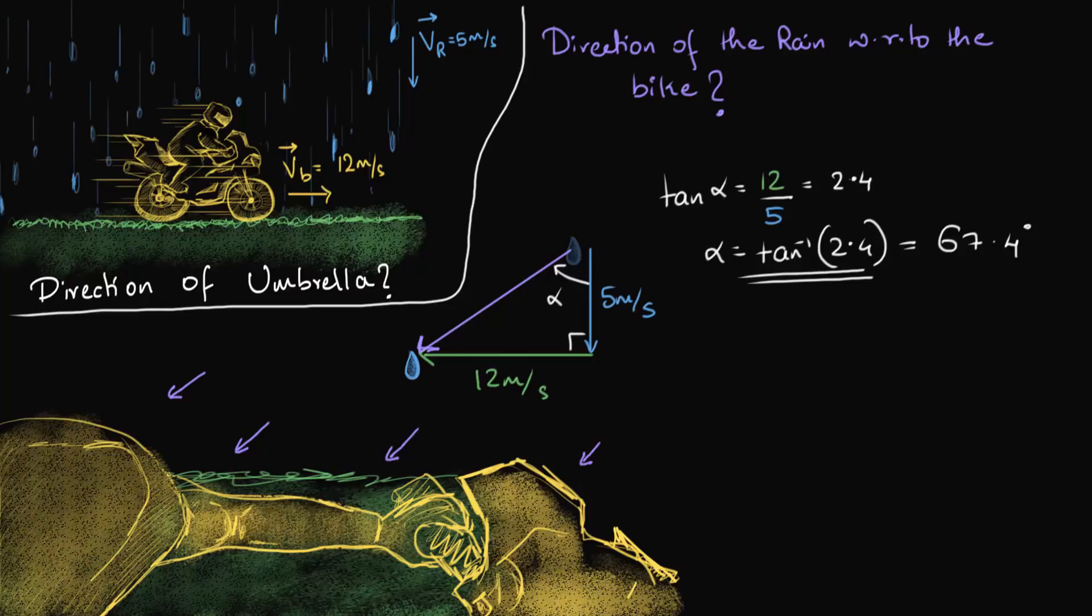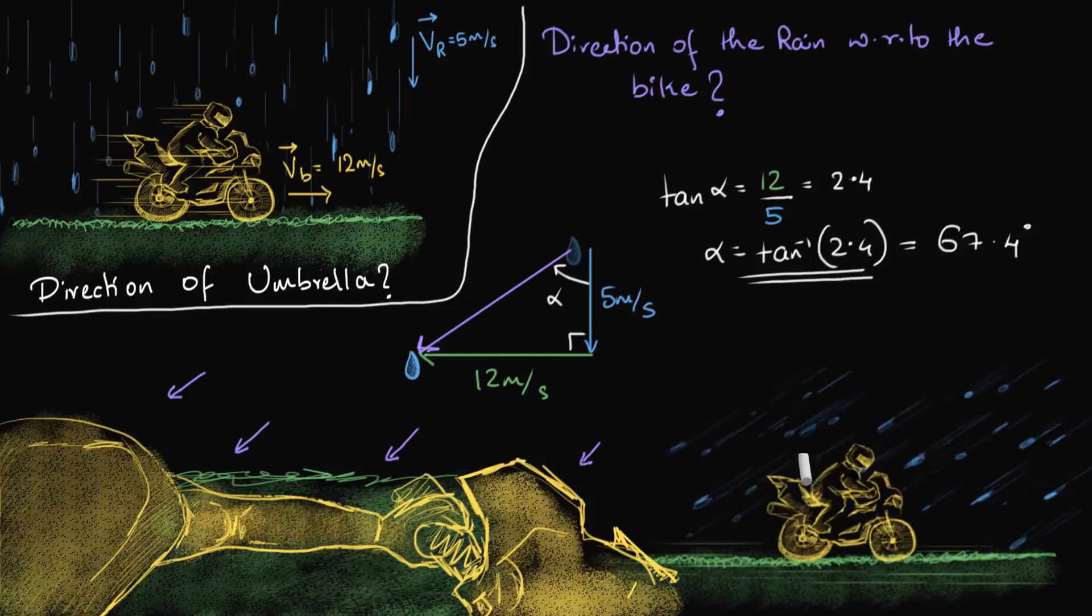And so now we know exactly at what angle the rainfall is happening from the bike's perspective. And so from the bike's perspective, the rainfall might look somewhat like this. This is what it looks like. And it's for that reason, if you have to hold your umbrella, it should be pointed a little bit forward. And since we know that the rainfall is making an angle of alpha, 67.4 degrees with respect to the vertical, you must also hold your umbrella at that same angle forward. And there's our solution.